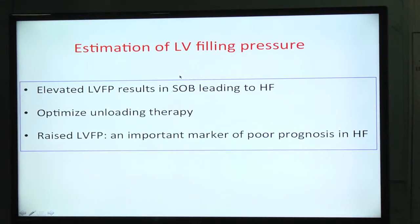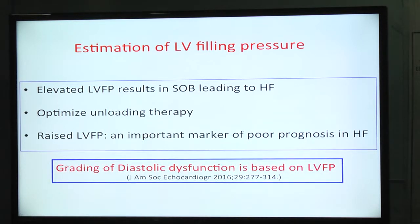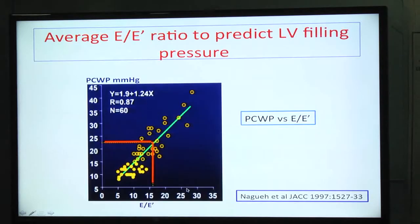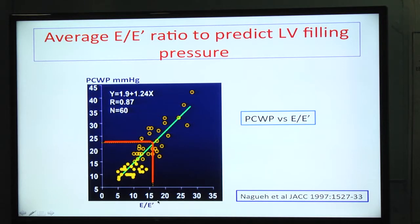We need to estimate LV filling pressure because elevated filling pressure leads to heart failure, helps optimize unloading therapy, and is an important marker of poor prognosis. In the latest guidelines, grading of diastolic dysfunction is based on LV filling pressure. Among various measurements, E/e' (E by e-prime) is the best indicator, because there is a linear correlation between pulmonary capillary wedge pressure and the E/e' ratio.